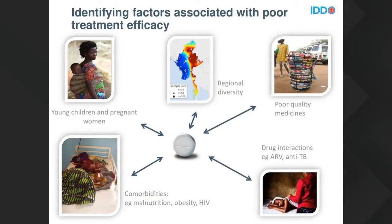What we are doing when we look at this data is identifying factors associated with poor treatment efficacy. Often it's young children, pregnant women, patients with comorbidities, patients with co-treatments interacting with the treatment, poor quality medicine, or regional diversity affecting efficacy. We need to understand all these parameters, because especially for NTDs when we are reaching a point close to elimination, it is only by understanding which particular populations don't respond well that we will be able to finish the work of elimination.